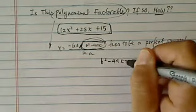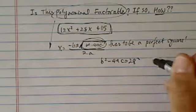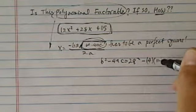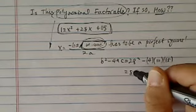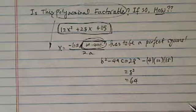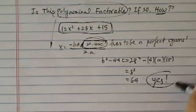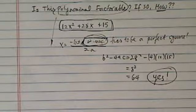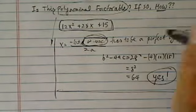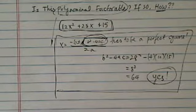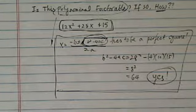So let's take a look. b squared minus 4ac for our problem here is 28 squared minus 4 times 12 times 15, and this one is actually 8 squared, or 64. So the answer is yes, we can factor it.